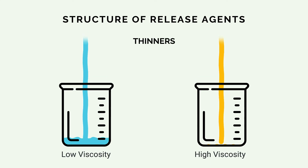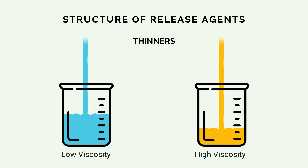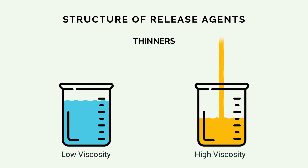Three: thinners. These products act as viscosity reducers for the release film formers and additives. Their purpose is to adjust the workability, layer thickness, drying time, etc. Thinners are basically organic solvents or water for emulsions.